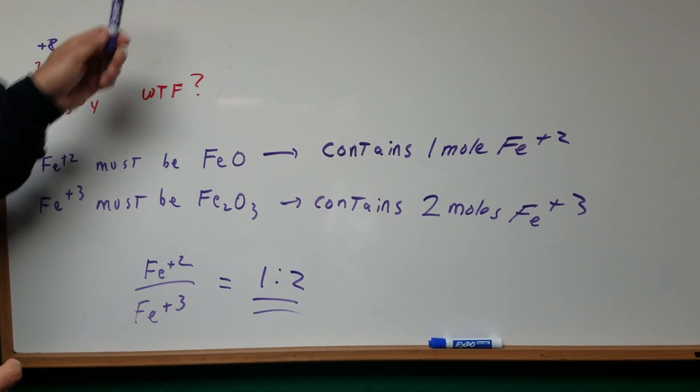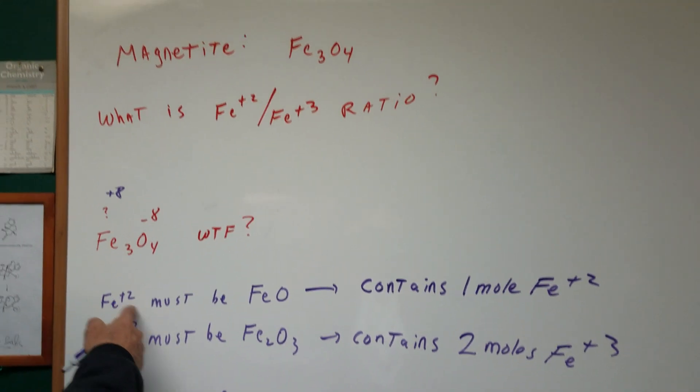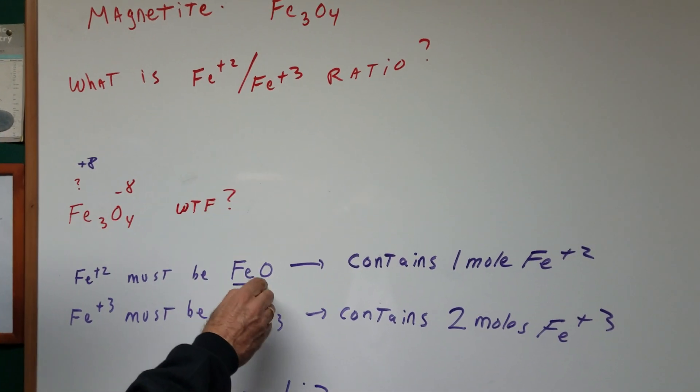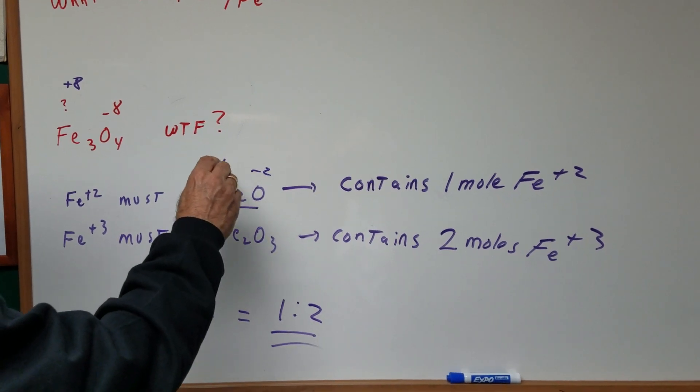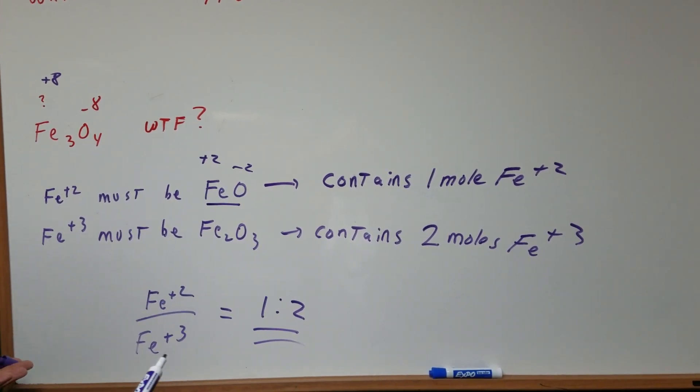Fe+2. The only possible way we can have Fe+2, it must be FeO. Because in FeO, oxygen is minus 2 and the Fe is the plus 2.